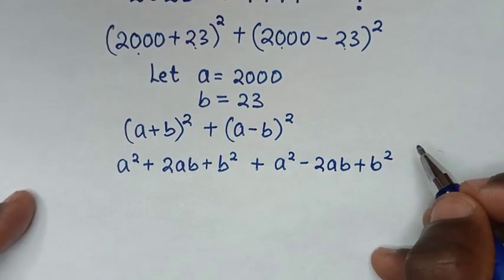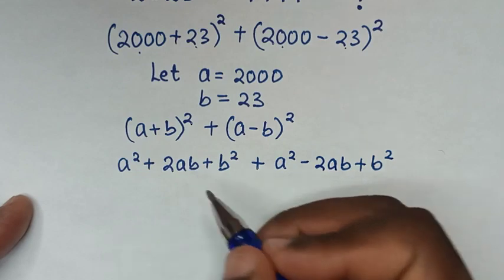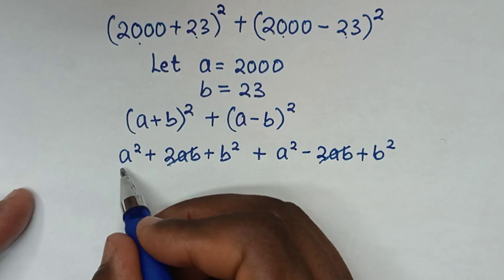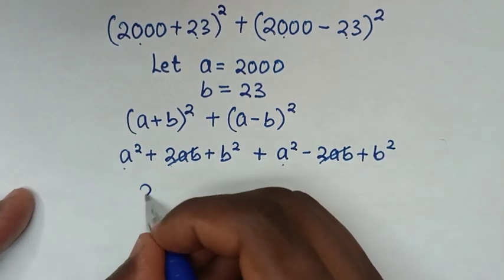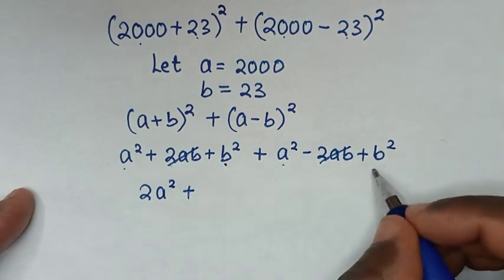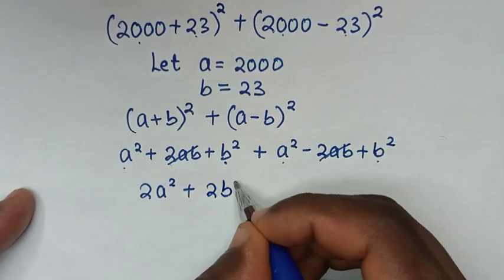Next step, 2ab minus 2ab is zero, so these cancel. Then a² plus a² is 2a², and b² plus b² is 2b².